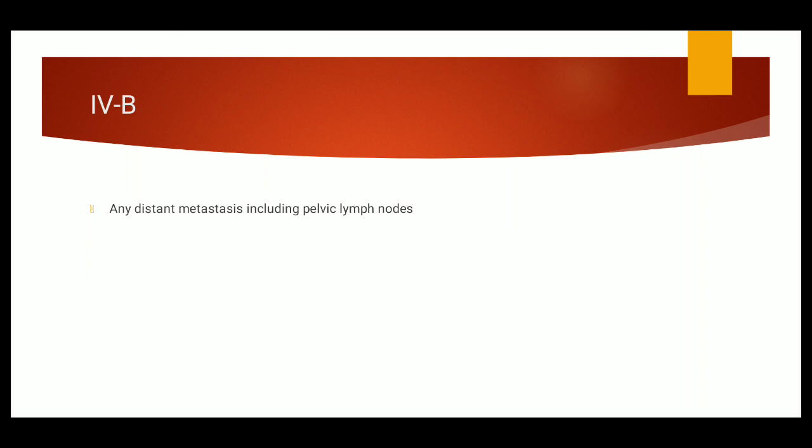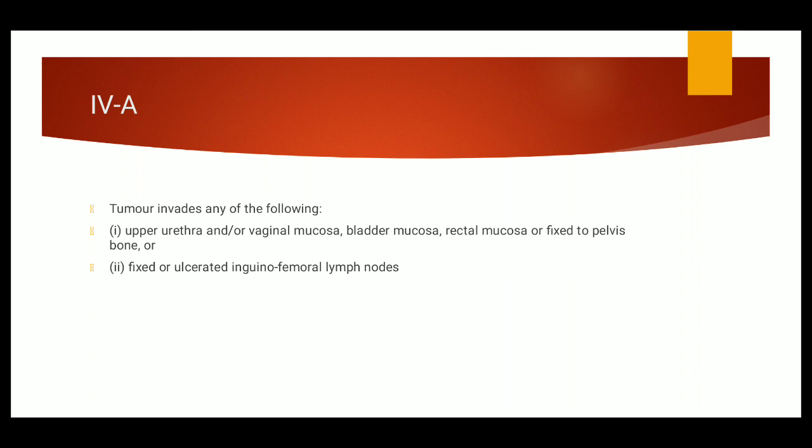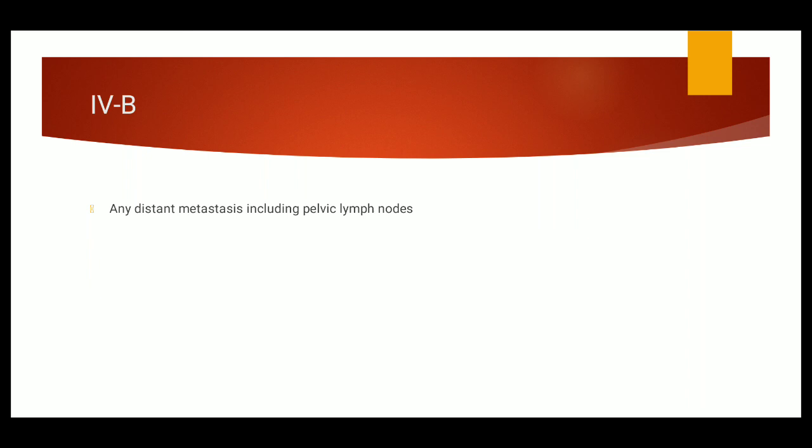In Stage 4b, what happens is there is any distant metastasis including the pelvic lymph nodes. It goes to distant organs like liver, like brain, anywhere it can go, including the pelvic lymph nodes. That is the main difference between Stage 4a and 4b. In Stage 4a, we had fixed or ulcerated inguinofemoral lymph nodes, and in Stage 4b, we have any distant metastasis including the pelvic lymph nodes.